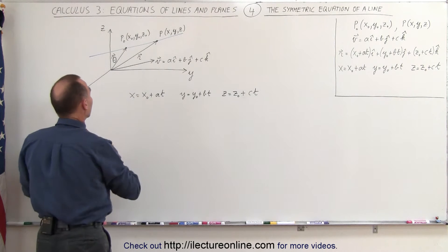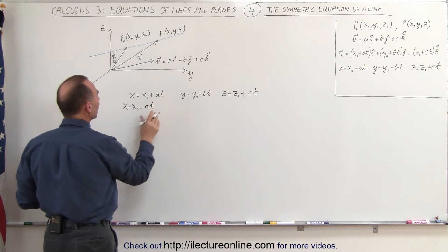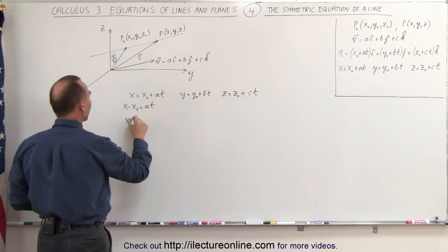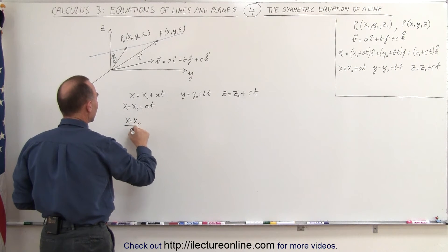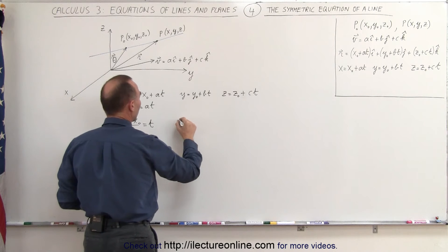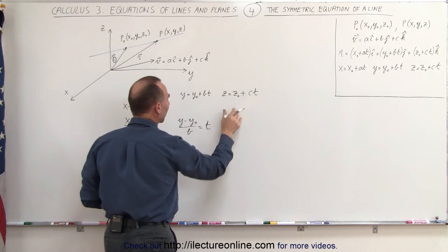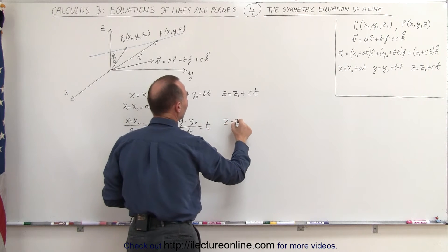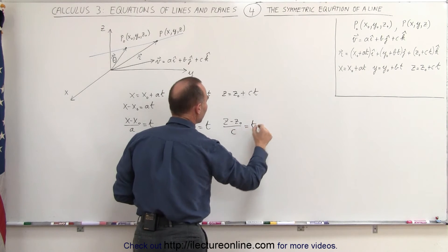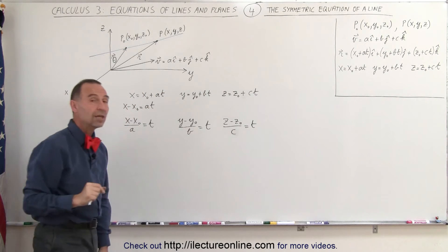First we move the x sub naught to the left, we get x minus x sub naught is equal to a times t, and then if we divide both sides of the equation by a, we get x minus x sub naught divided by a is equal to t. We can do the same over here, we end up with y minus y sub naught divided by b is equal to t, and here we get z minus z sub naught divided by c is equal to t. Now notice we have three equations, all three of them that are equal to t.